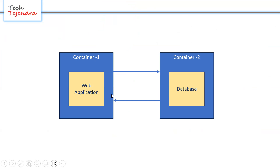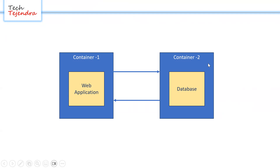In the web application we put the IP address of the database, so the web app connects to the database using that IP. This works in a normal scenario, but in a container environment — which is very volatile — if the database container is restarted due to poor health, it gets a new IP from the available pool, and the connection between container 1 and container 2 breaks.